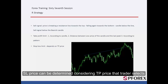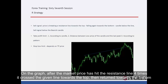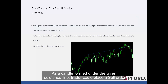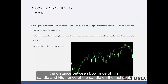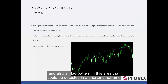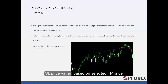SL price can be determined considering the TP price that the trader selects. On the graph, after the market price hit the resistance line four times, it crossed the given line towards the top, then returned towards the bottom. As a candle formed under the resistance line, a trader could place a sell order. TP prices could be determined by the bearish candle length, the distance between low price of this candle and high price of the candle on the last peak, and a flag pattern detectable in a shorter timeframe. SL price varied based on selected TP price.